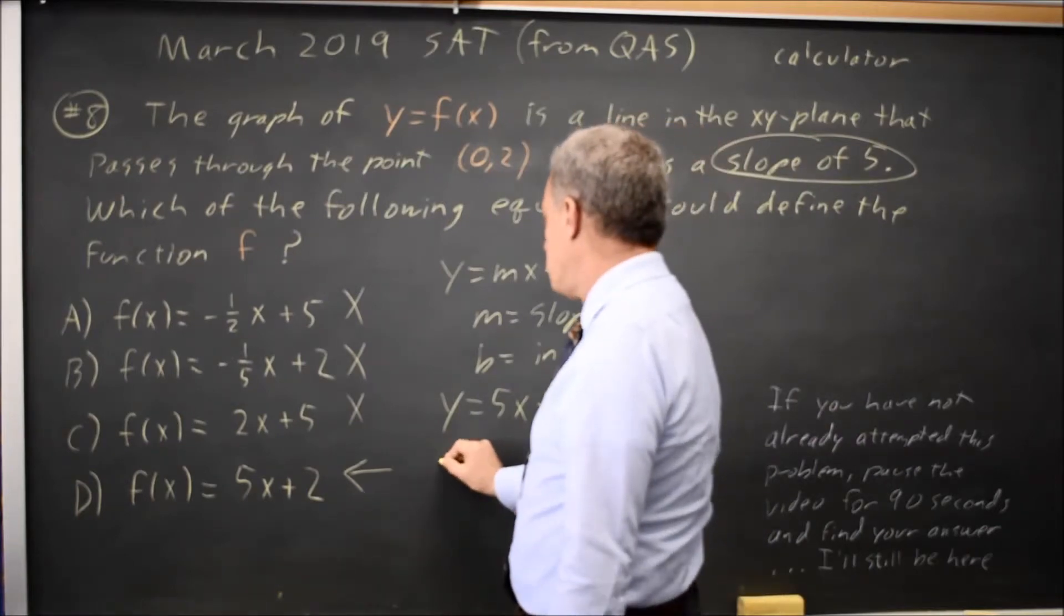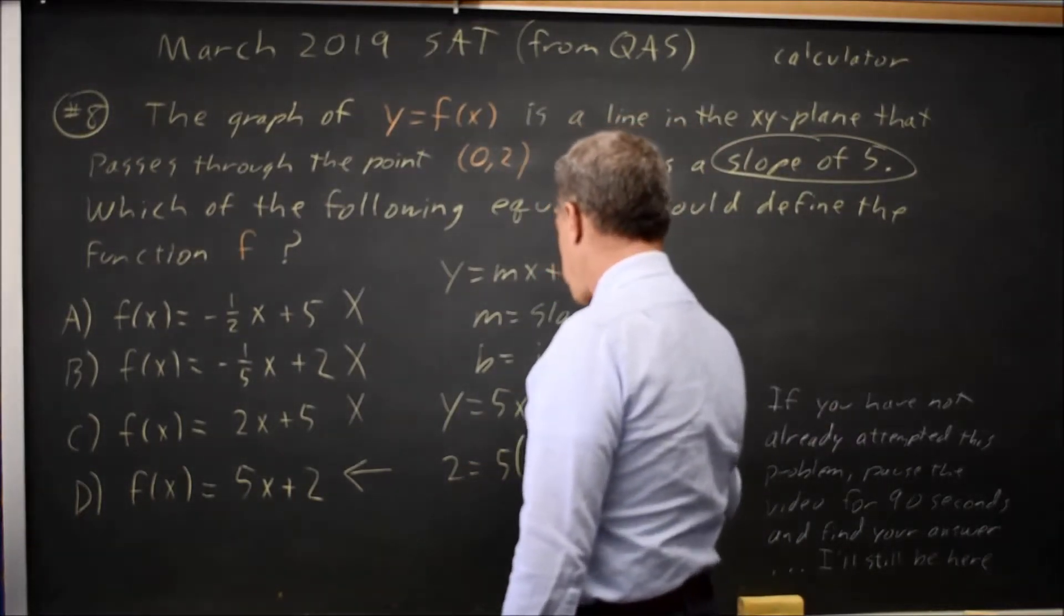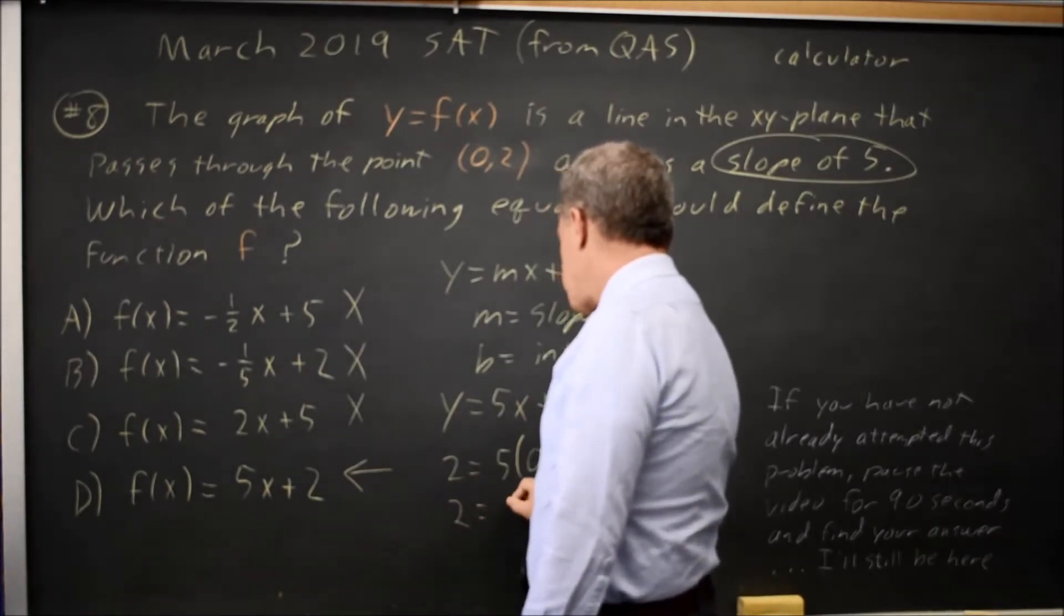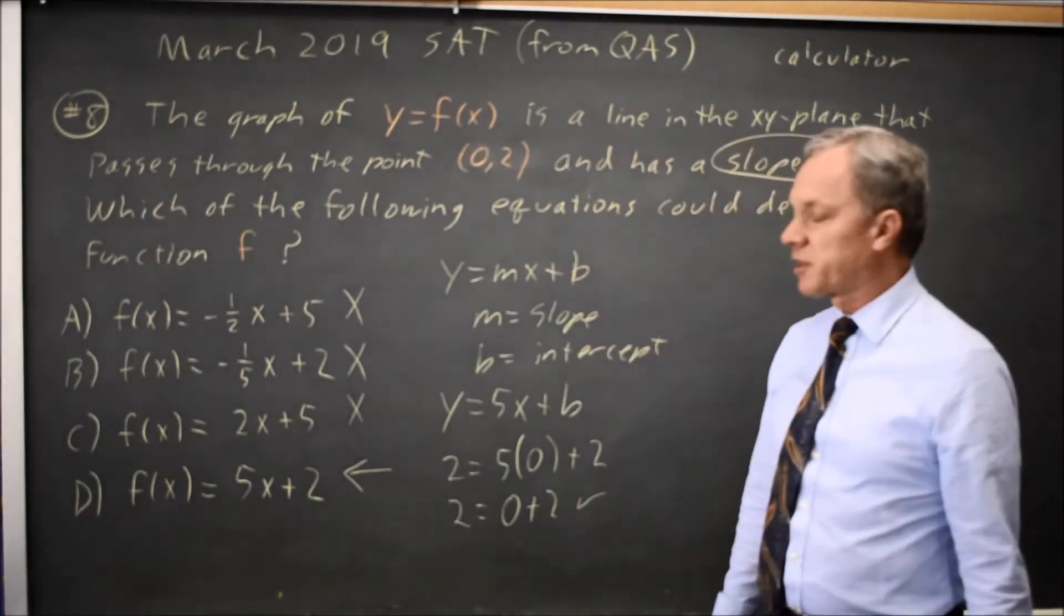The y value is 2 when the x value is 0. 2 equals 5 times 0 is 0, plus 2, and that is correct, so it does pass through that point.